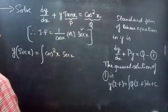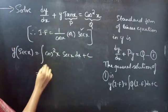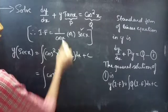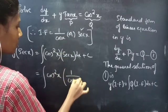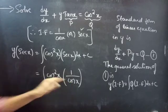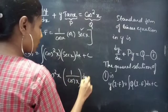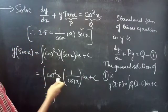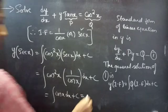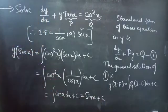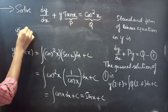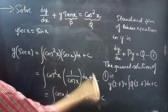So: y sec x equals to integral of cos squared x into 1 by cos x dx plus c. We can replace sec x by 1 by cos x; since we have cos squared x, one cos x gets cancelled, leaving us with integral of cos x dx plus c, which equals sin x plus c. Therefore, the required general solution is y sec x equals sin x plus c.